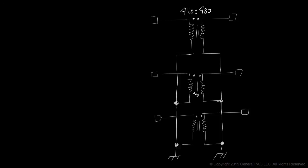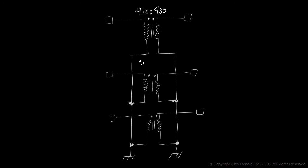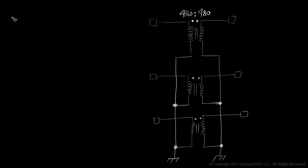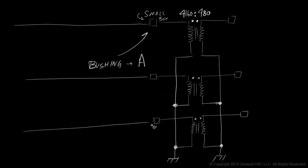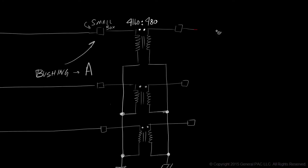Okay, so now that we've drawn our YY-connected transformer in this particular way, let's draw our lines or conductors. We'll begin by drawing line A. And line A is connected to the bushing of winding A, which is illustrated by this small box. Let's also draw line B and line C on the primary side. And line A, line B and line C on the secondary side.